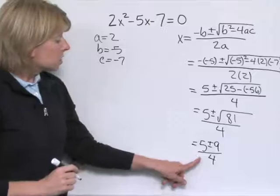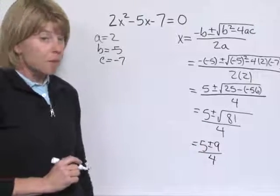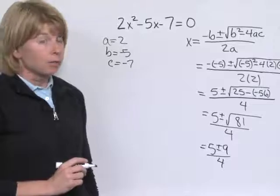So we do have two solutions here. One is 5 plus 9 over 4, and the other is 5 minus 9 over 4.